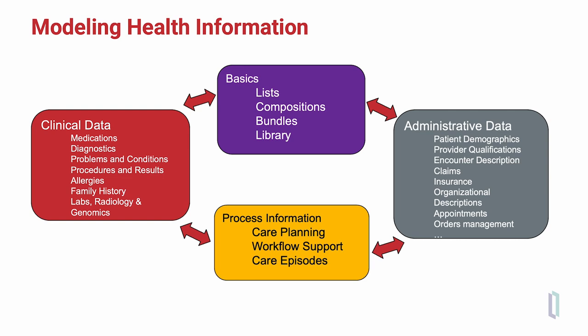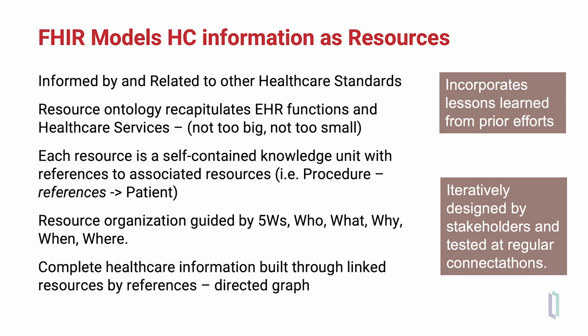All of these are used together with FHIR resources involved in the processes or workflows of healthcare, including care planning and care episodes. FHIR models healthcare information as these resources, informed by and related to other healthcare standards. The HL7 organization has produced over 300 healthcare standards previously, and the lessons learned are incorporated into the FHIR specification. Resource organization is guided by the five W's — who, what, why, when, and where did healthcare take place. With linking between FHIR resources, the complete healthcare information of an individual can be represented as a directed graph.